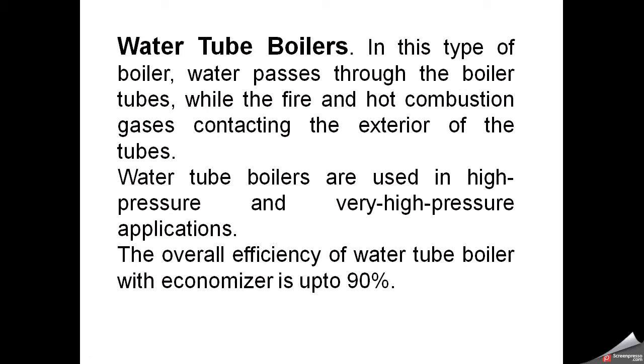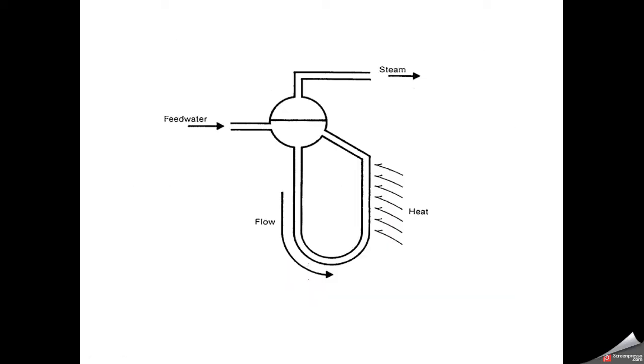This is a basic schematic. This is a tube and water flows through this tube. Feed water comes in this drum. Heat source is applied outside the tube, it heats the water, then water rises up due to the difference of density of cold and hot water. Steam is separated out and the cold water comes downside.